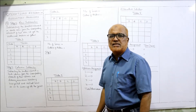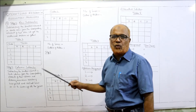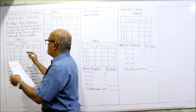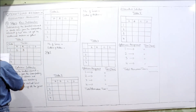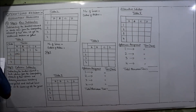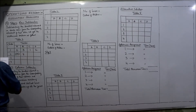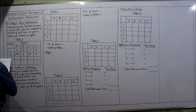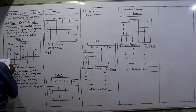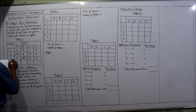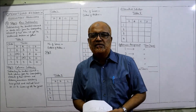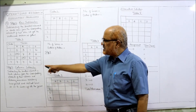Step one is row subtraction — subtracting the smallest element in each row from the corresponding elements of that row. First row minimum is 4: 4−4=0, 7−4=3, 5−4=1, 6−4=2. Second row: I am putting an infinity sign for the restricted cell, then 8−4=4, 7−4=3, 4−4=0. Third row minimum is 3: 3−3=0, restriction (infinity), 5−3=2, 3−3=0. Last row minimum is 4 (actually 2 based on values): resulting in 4, 2, 2, 0. First step completed.